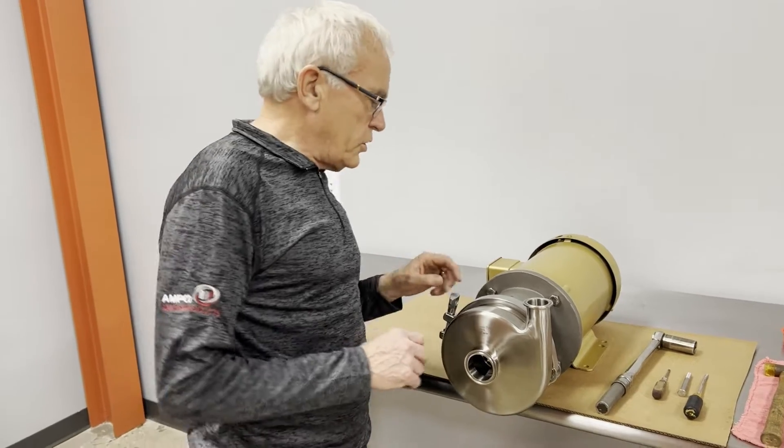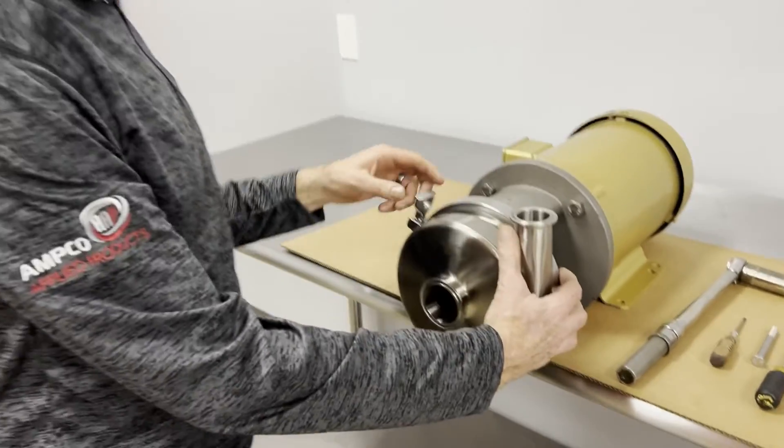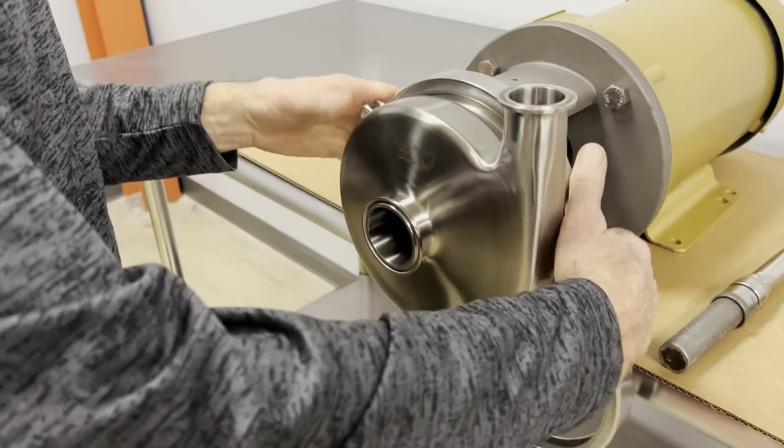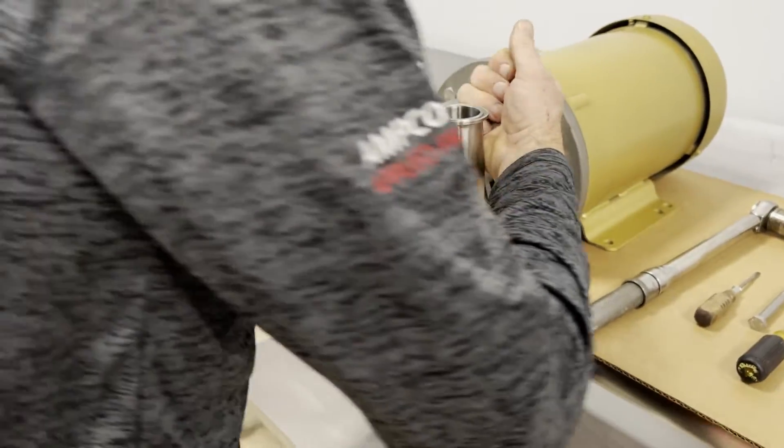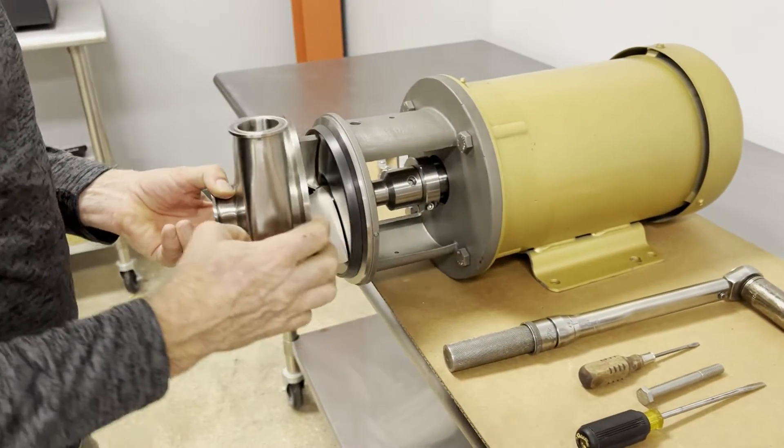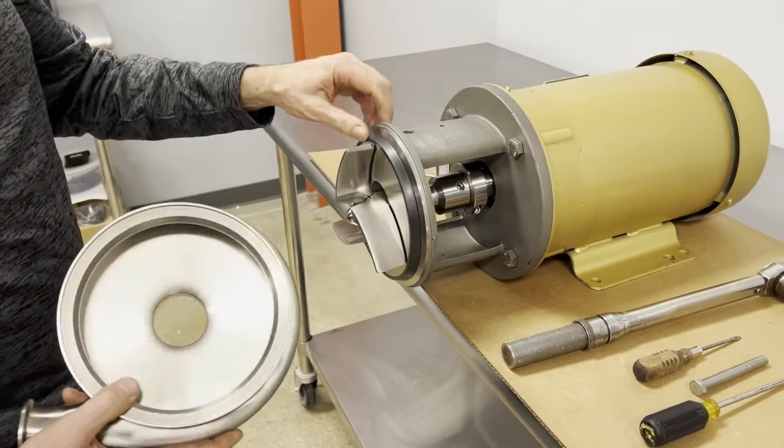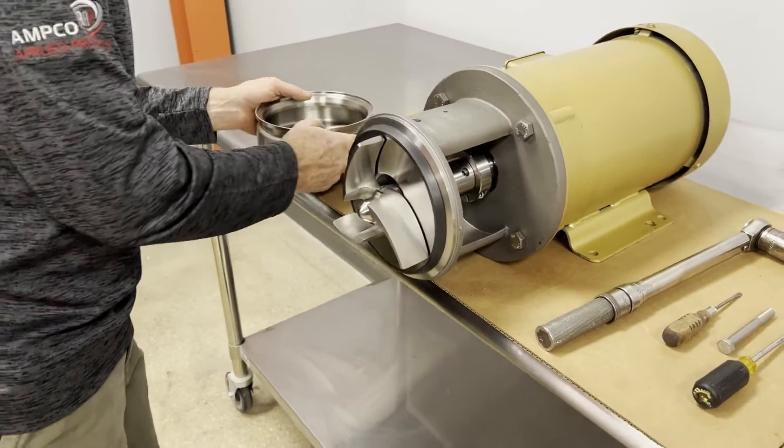So the first thing I'm going to do is remove the casing clamp. To get this casing off, it's going to take a little bit of a tap from your hand to overcome the gasket casing seal.